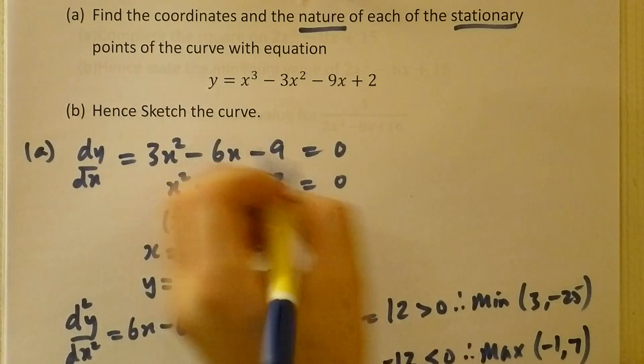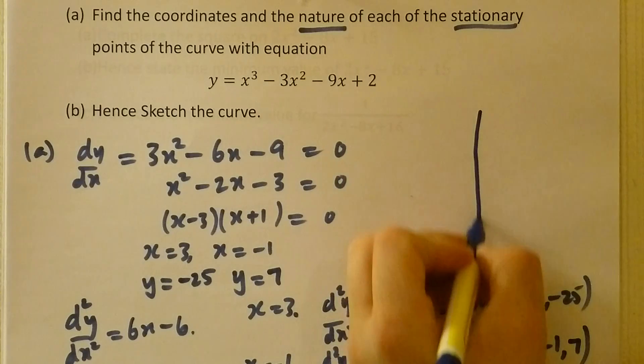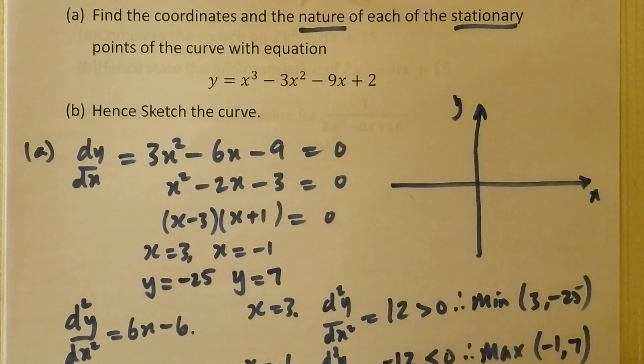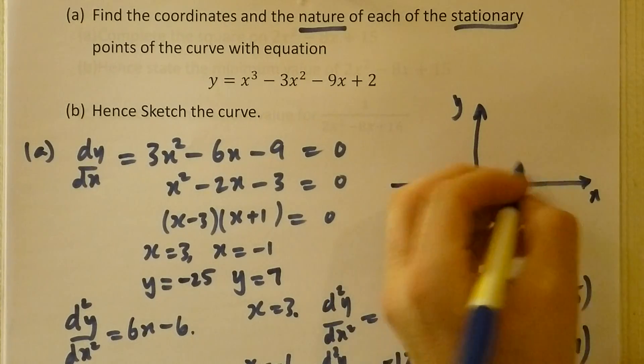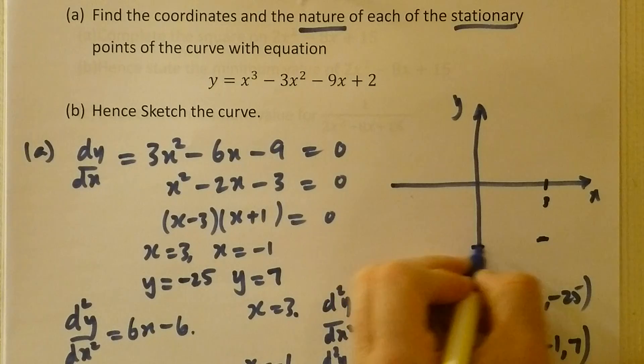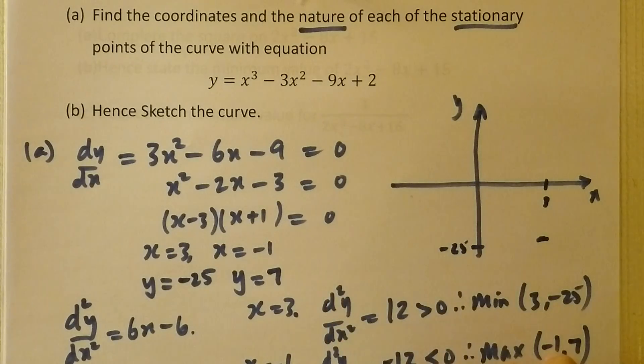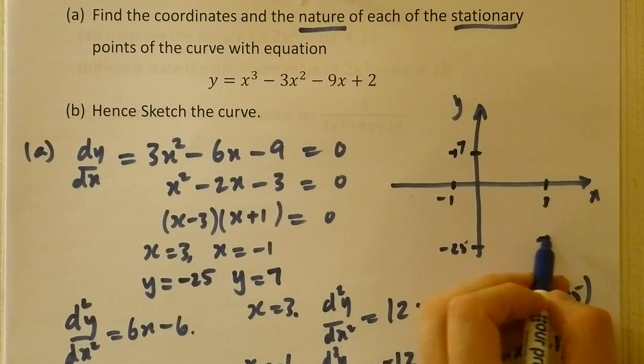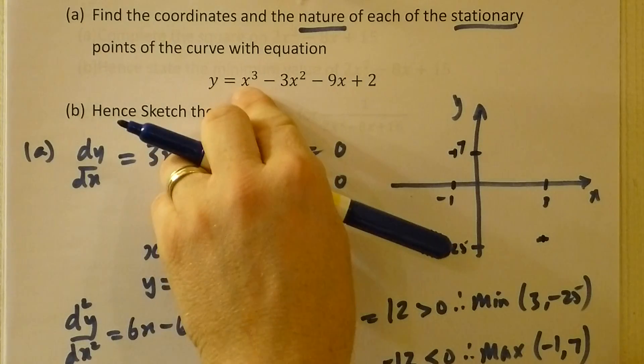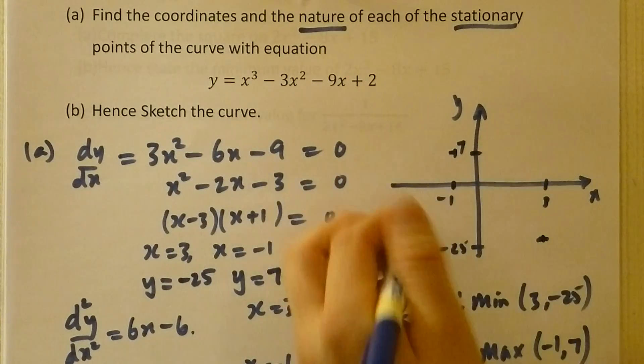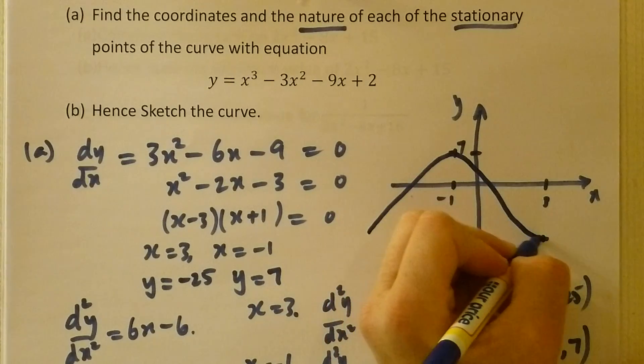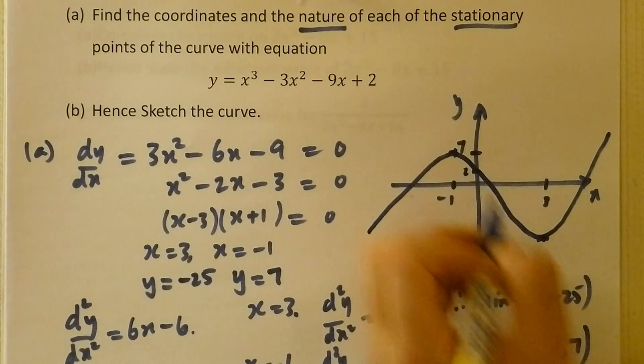Part B asks for a sketch. Well, at 3 we're down at -25. At -1 we're up at 7. There we know it's a maximum. There we know it's a minimum. If I put nothing in, I get 2, so it crosses at 2. Which means the graph will look something like that, crossing there at 2.